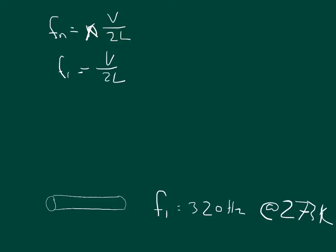And then we can solve for L, so we want to know what the length is, so length is equal to V over 2 times the frequency. And I'll put a little subscript 1 right there. Now it tells us that it's at 0 degrees Celsius, so at 0 degrees the velocity should be 331 meters per second.